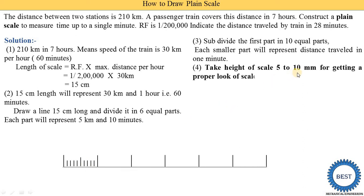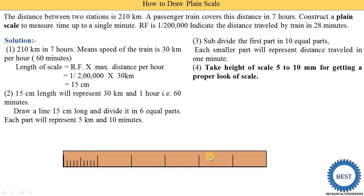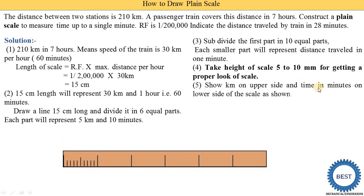Take the height of the scale as 5 to 10 mm for a proper appearance. We make a rectangle with height of 5 to 10 mm. Kilometers are marked on the upper side and time in minutes on the lower side of the scale, as shown.